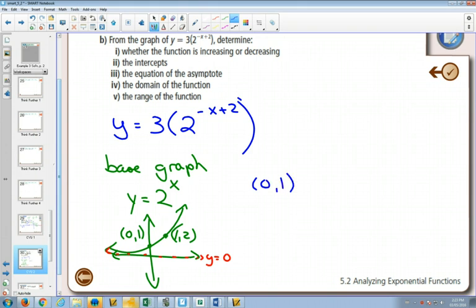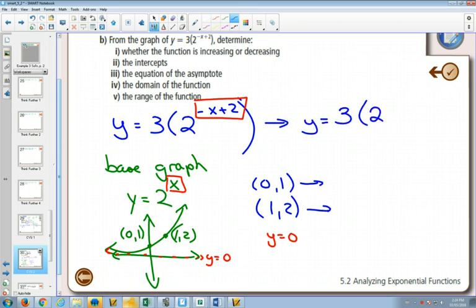So then once we take those two points and the asymptote. Now on this one, before we go and do things, notice that we have a horizontal reflection and a horizontal translation. Anything that's in the place where the exponent was will always affect your graph horizontally. And when you have a reflection and a translation, you always have to have it in factored form. So the first thing we're going to do is rewrite this, factor out that negative so that it's negative x minus 2.